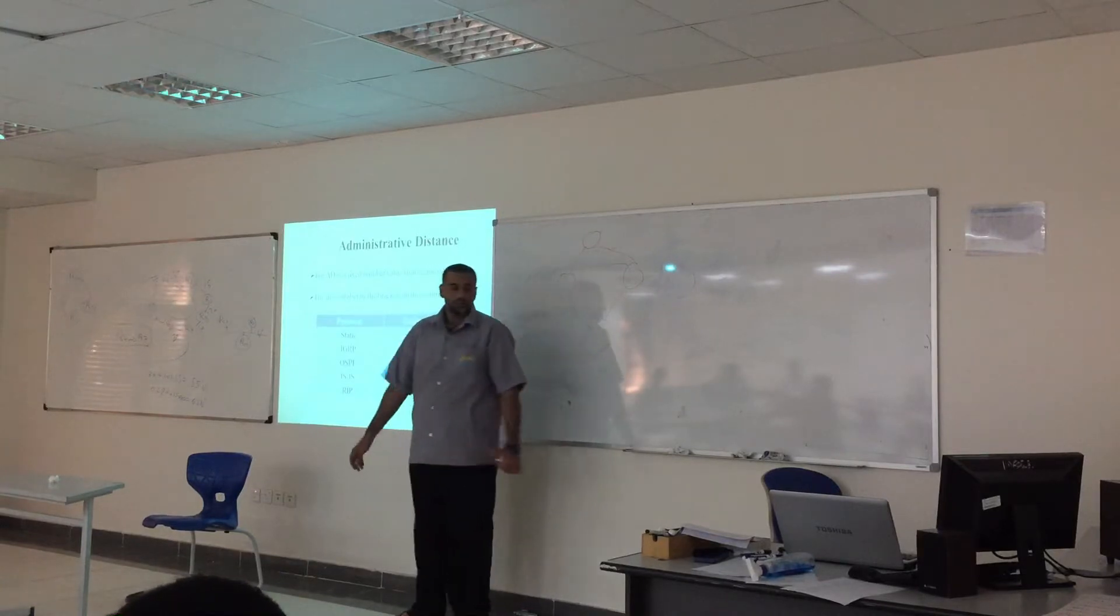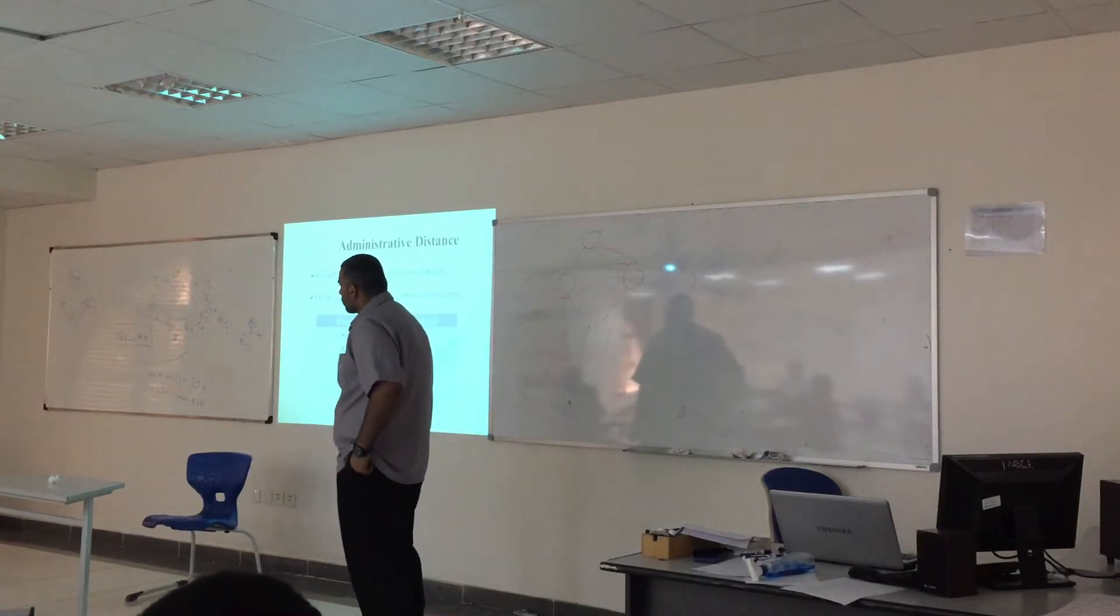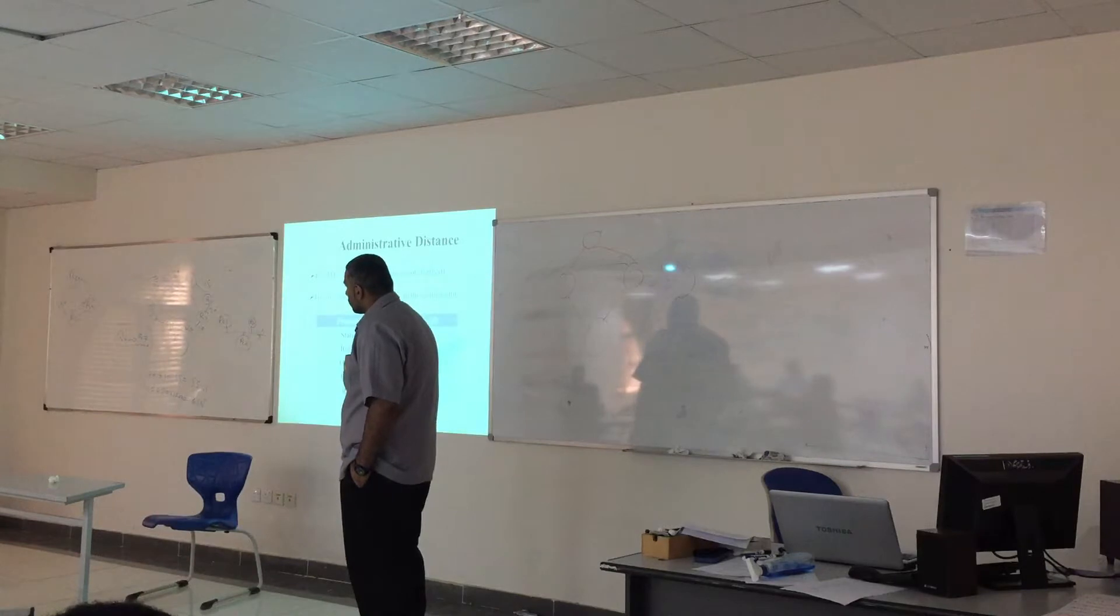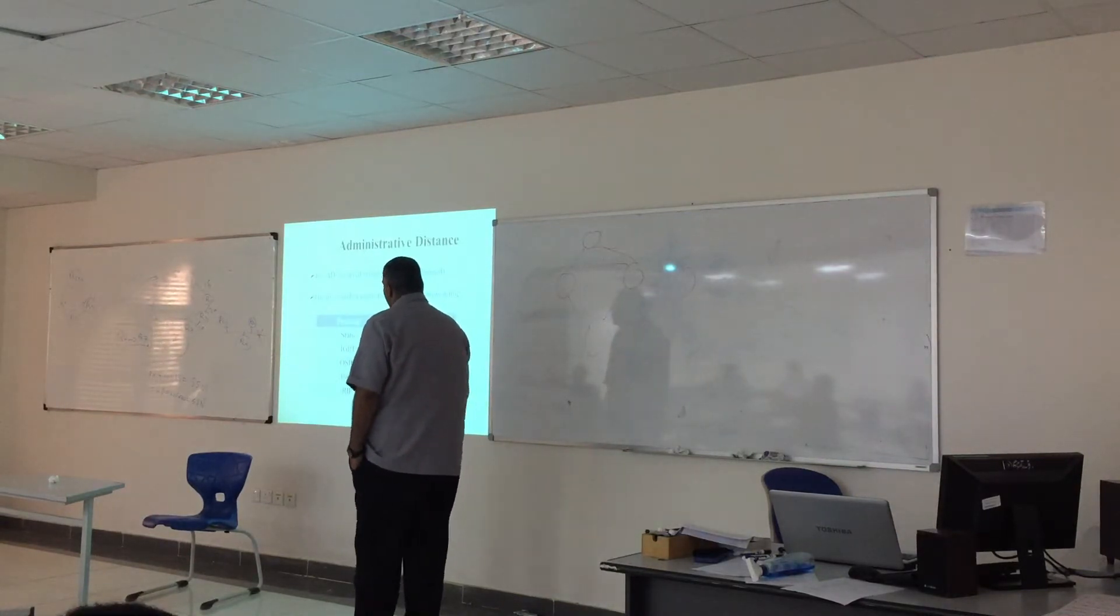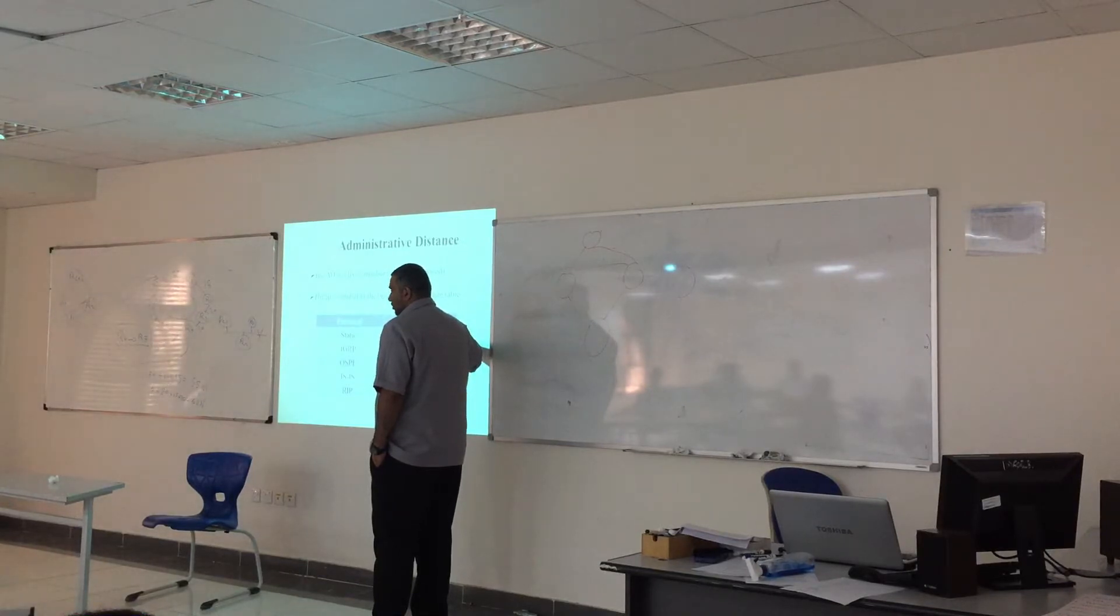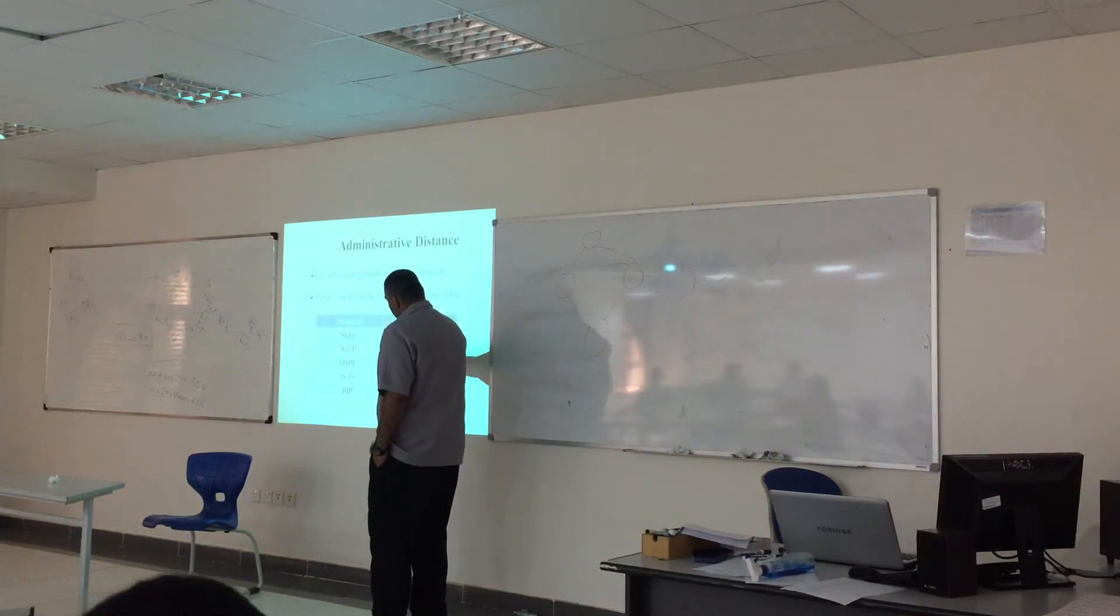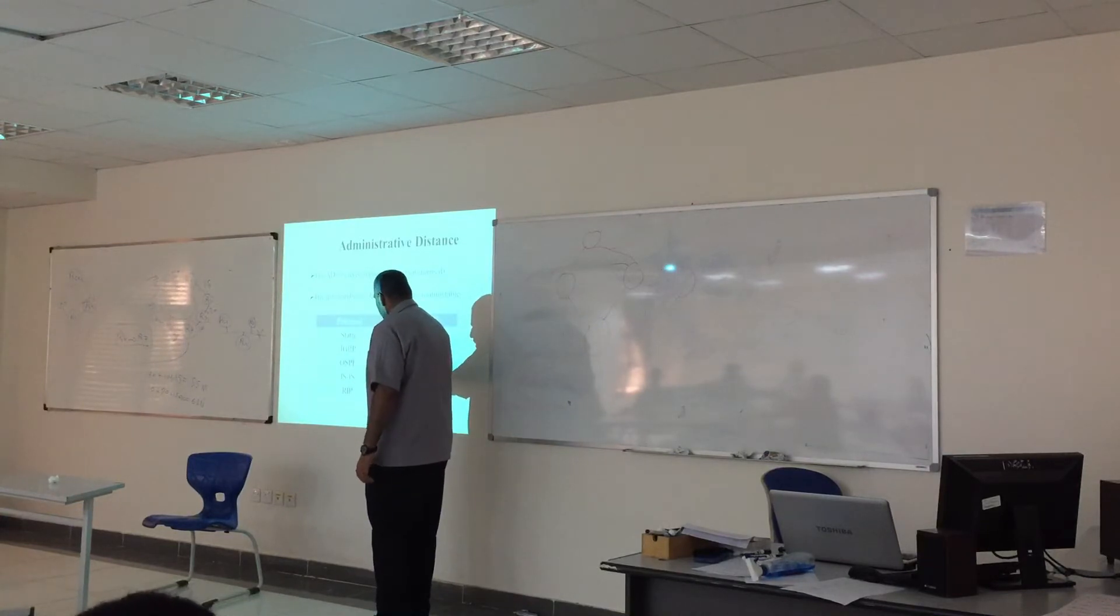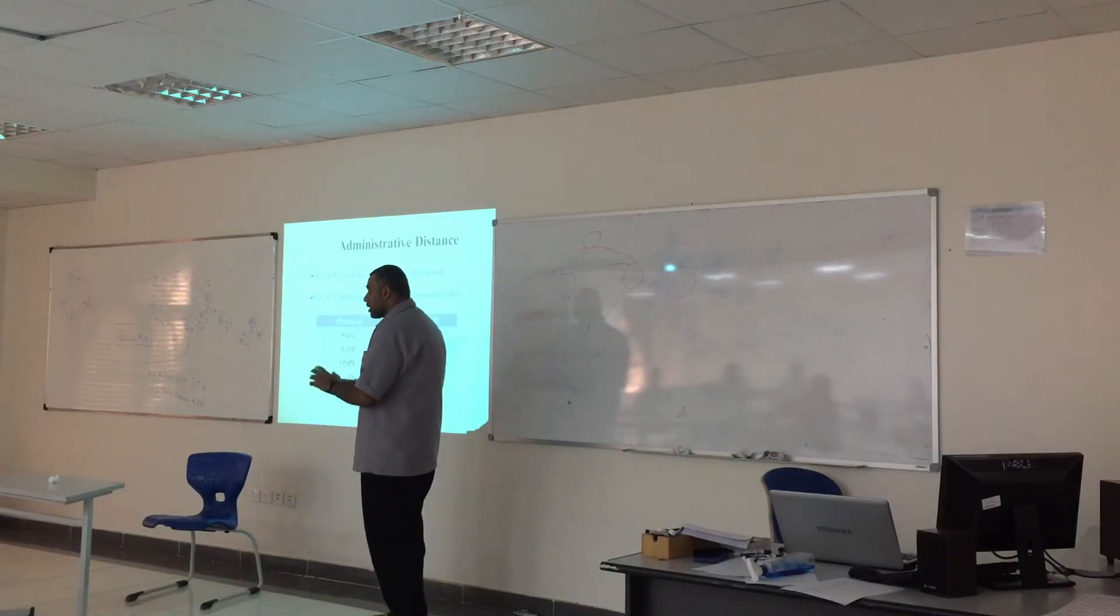I have a question. What is the difference with the lowest number? The lowest is the preferred route. How can it work? Maybe you have OSPF and IGRP. How can it work?